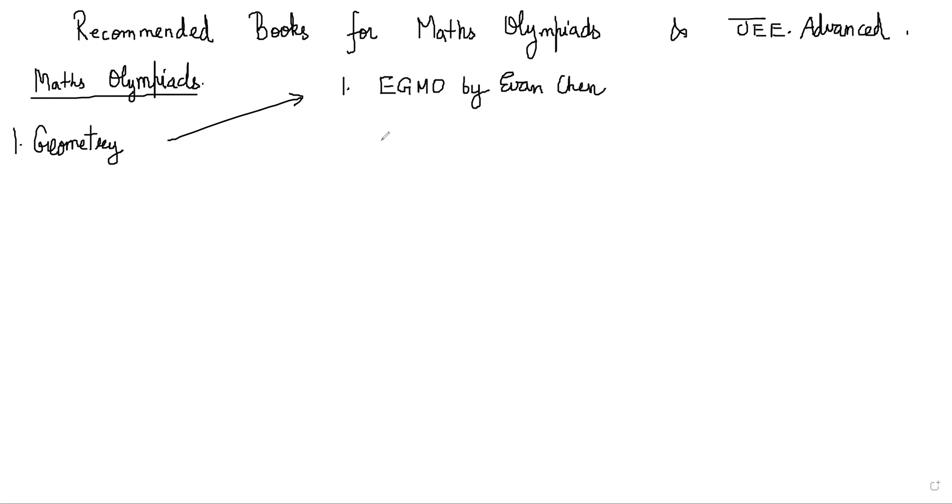Might be a little advanced, but you can definitely look at that. The second is Secrets of Triangles by Alfred S. Posamentier. This is a nice book. It has a lot of theorems that you might not otherwise encounter.